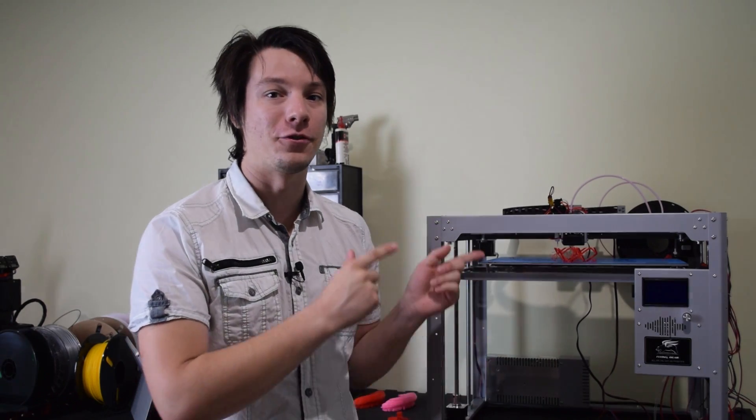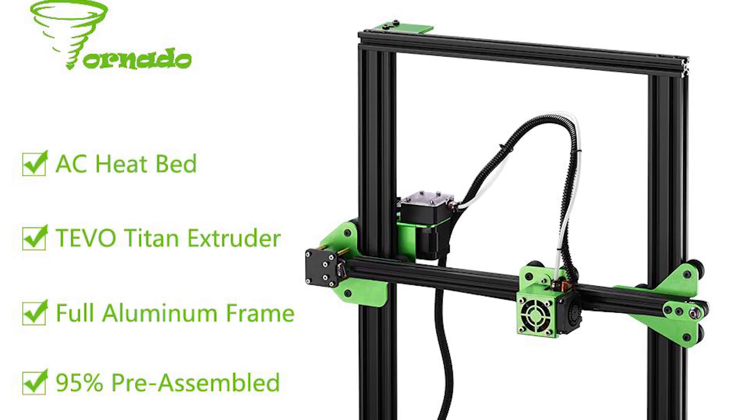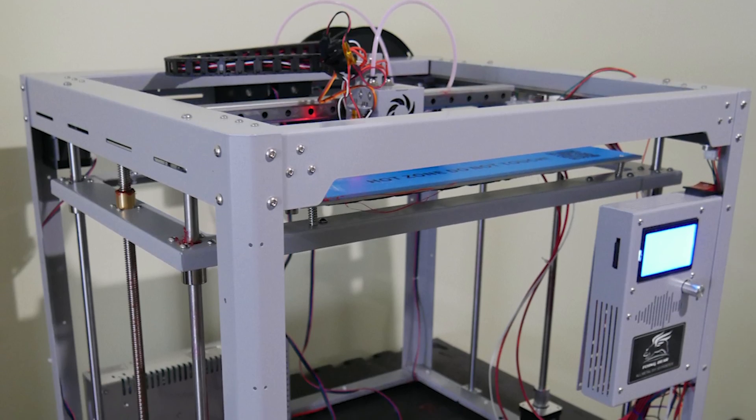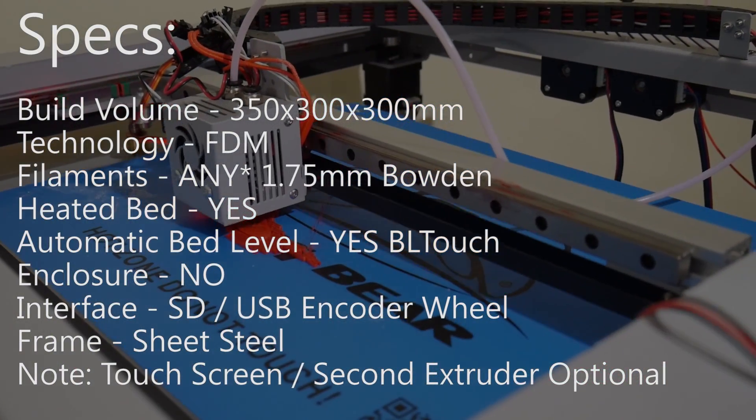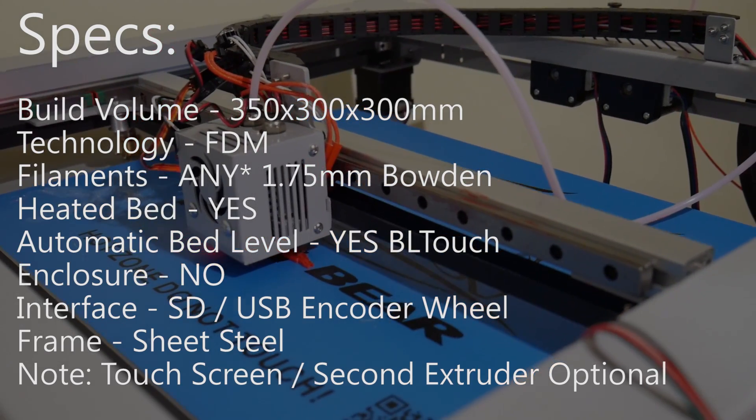This time it's the Flying Bear Tornado, not to be confused with another 3D printer with the same name. I had no idea what I was getting myself into when I agreed to this review of a kit. I just saw linear rails and thought, oh cool, something different. It has a print volume of 350 by 300 by 300 millimeters and it does indeed have the very neat Core XY or HBOT XY configuration.